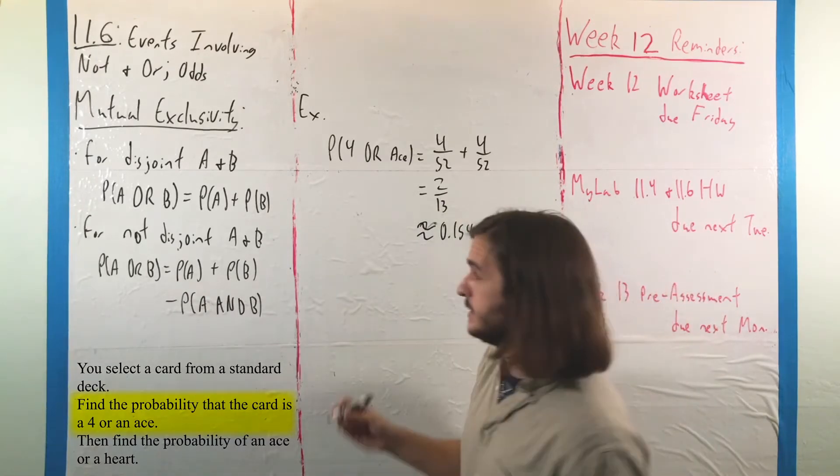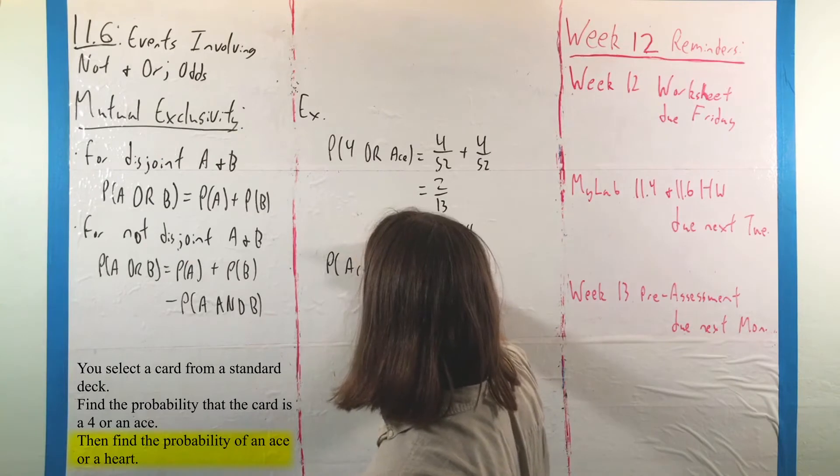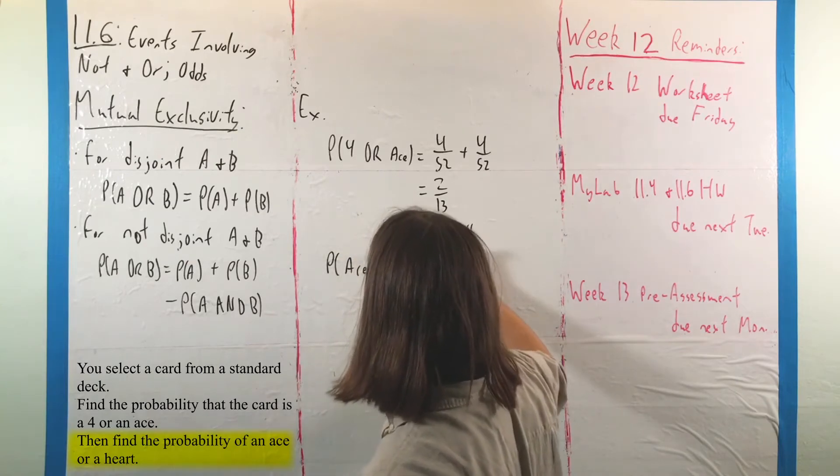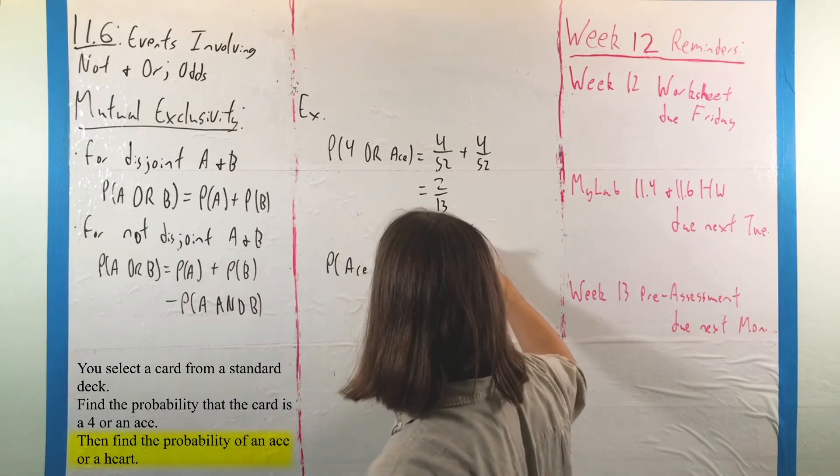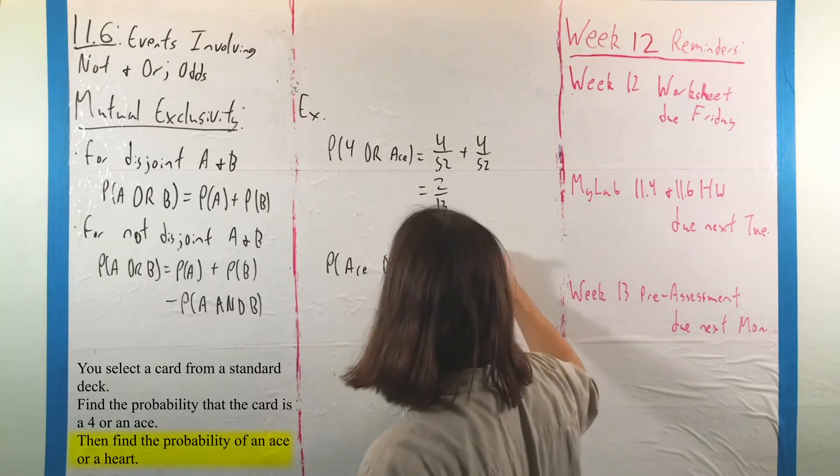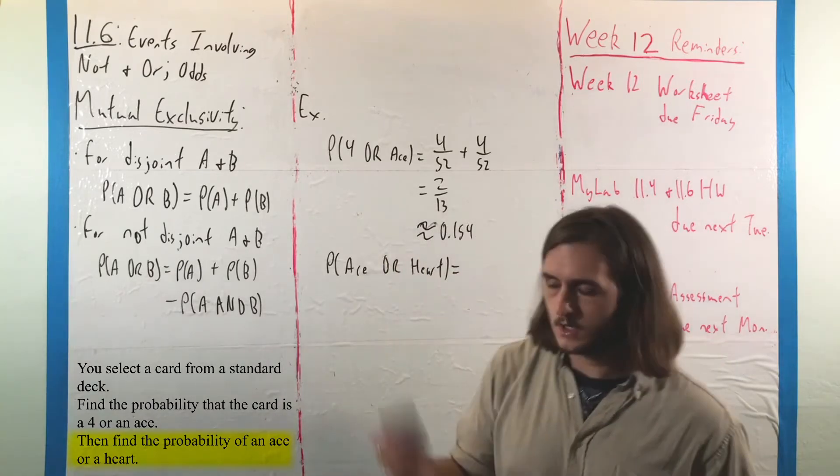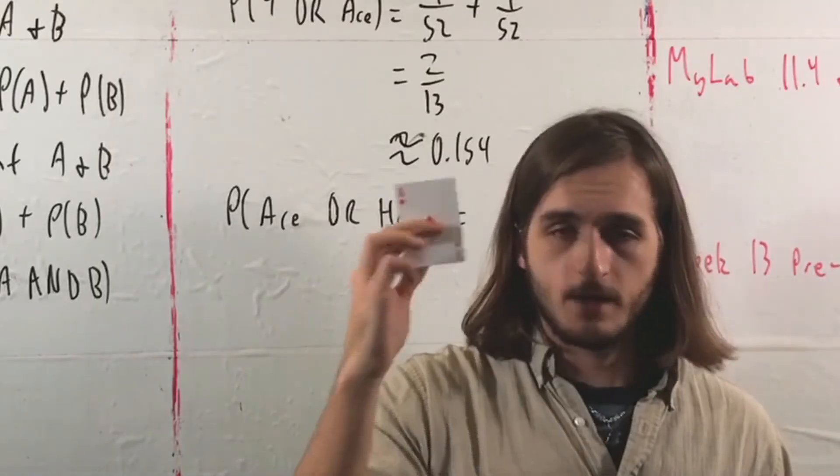Now, for our second case, where we're looking at the probability of getting an ace or getting a heart, understand that again, we're only drawing one card here. And when I think about the probability of that card being an ace.